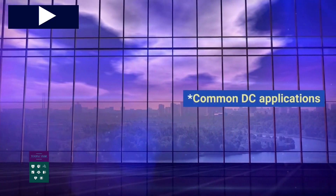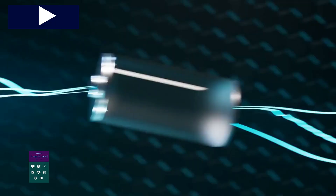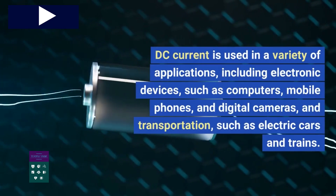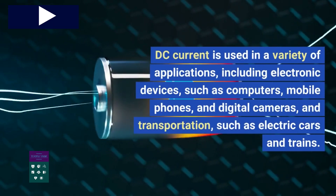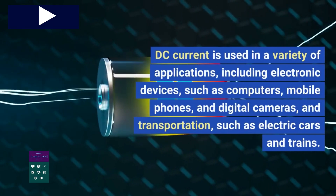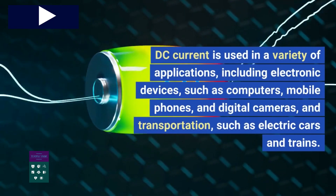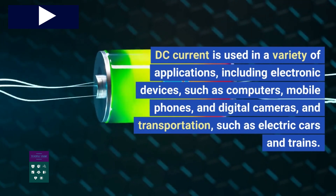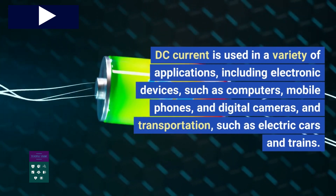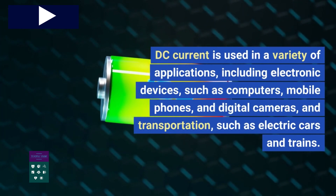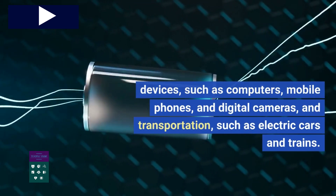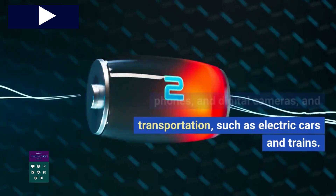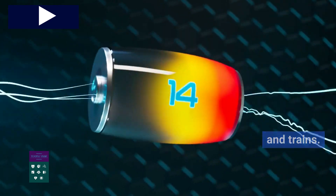DC current is used in a variety of applications, including electronic devices such as computers, mobile phones, and digital cameras, and transportation such as electric cars and trains.